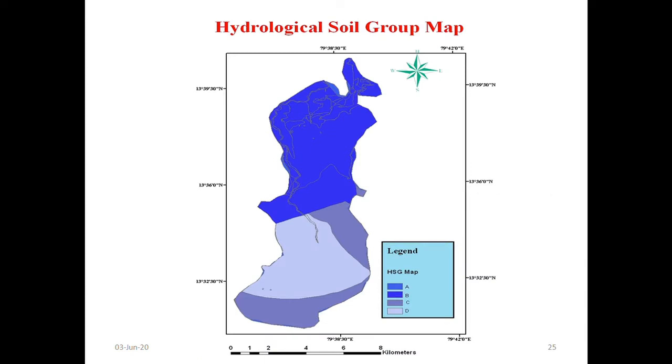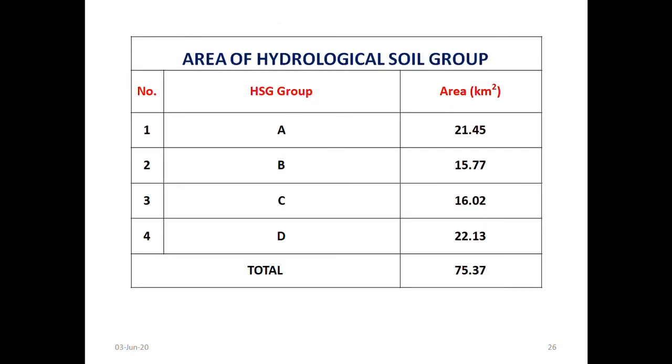This is the final hydrological soil group map which is prepared: Group A, group B, group C, group D. According to this, area is being classified.